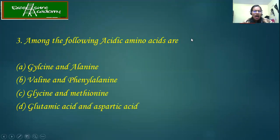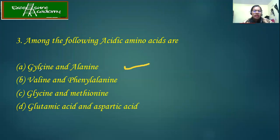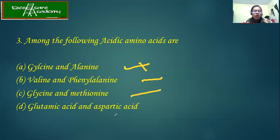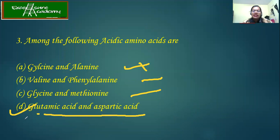Among the following, which are acidic amino acids? Glycine and alanine? No. Valine and phenylalanine? No — those are aromatic and hydrophobic amino acids. Glycine and methionine? No. What we have is glutamic acid and aspartic acid. The name itself suggests that they are the acidic amino acids. Hence the answer is D.